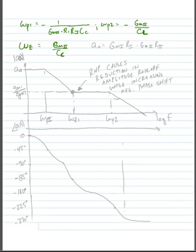And we also could have found that our DC gain, A sub zero for the whole amplifier, was equal to gm1, r1, times gm2, r2, and we found that in a prior lecture.